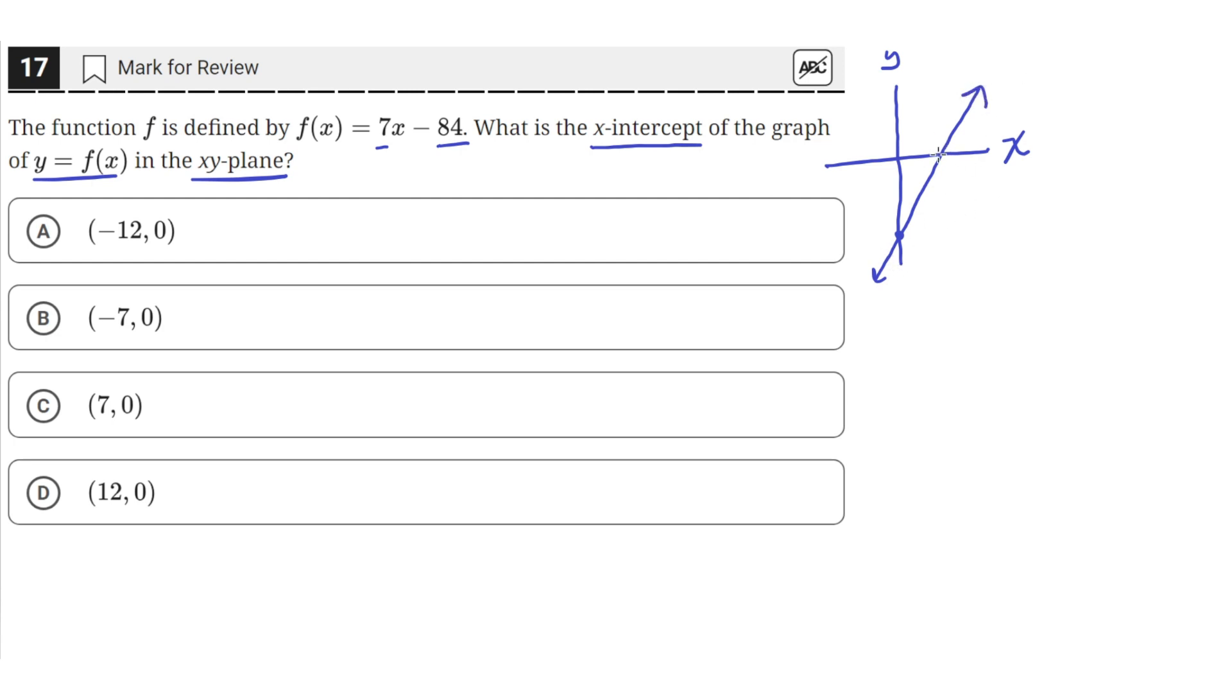And we need to find the x-intercept, which is where the line crosses the x-axis. And we need to know the x-value of that, so the x-coordinate of the point that it crosses the x-axis. These are the axes.